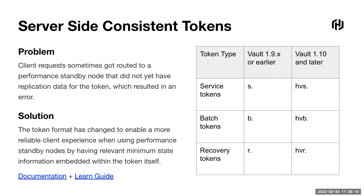Prior to Vault 1.9, client requests could sometimes get routed to a performance standby node that didn't have the replicated data yet, resulting in an error. We did roll out some fixes for this, but it required custom HTTP headers on the client. We wanted a better fix. So in Vault 1.10, we changed the token format to enable a simpler and more reliable client experience when using performance standby nodes — we bake the minimum relevant state right into the token itself.